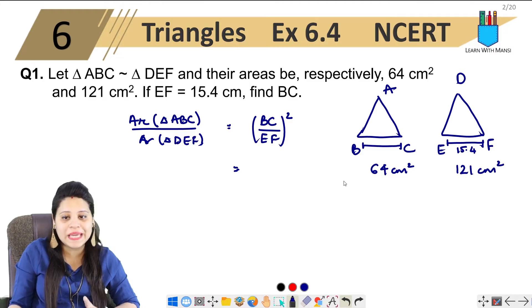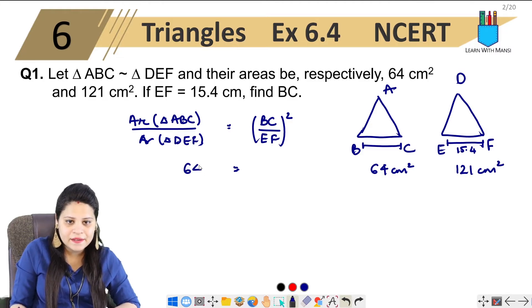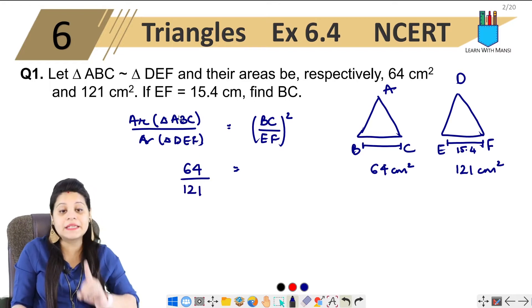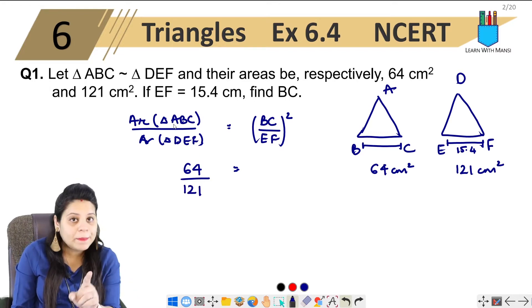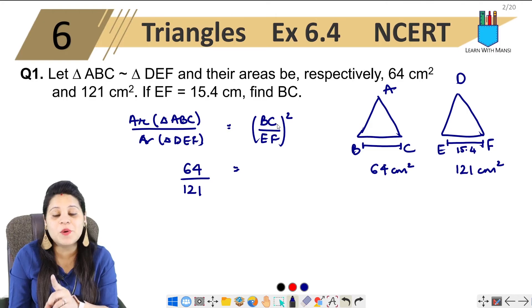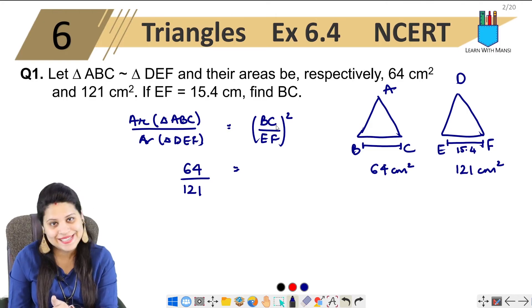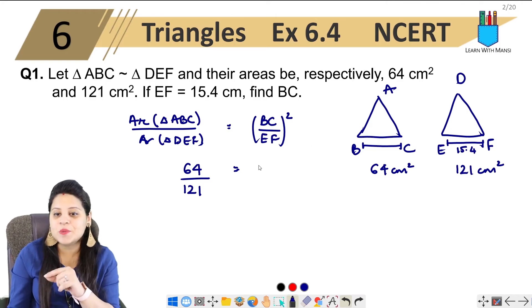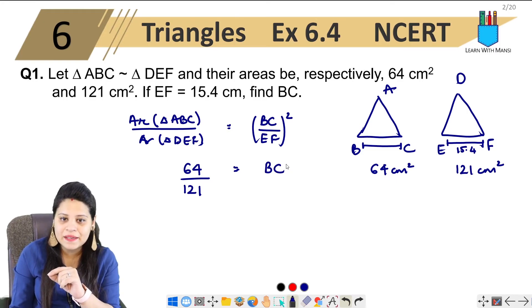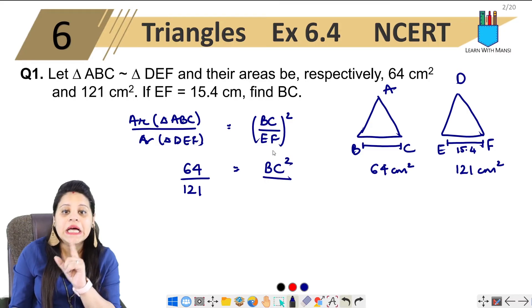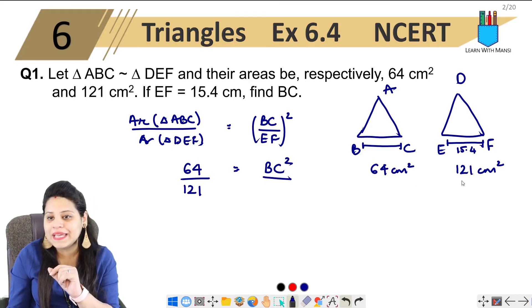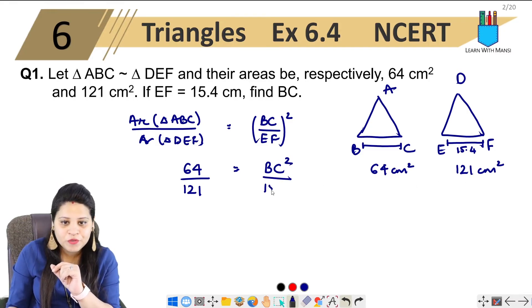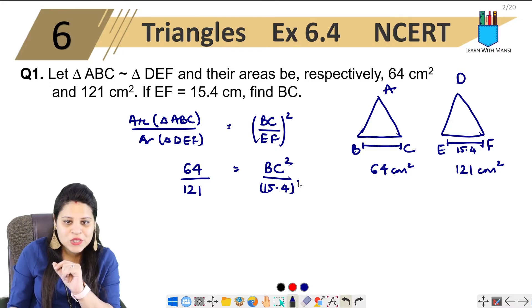Now we have to put in the values. We put the area of triangle ABC as 64 and area of triangle DEF as 121. The corresponding sides are BC and EF, where EF equals 15.4. So we have 64 upon 121 equals BC squared upon 15.4 squared.